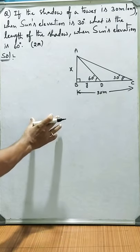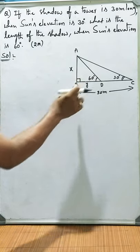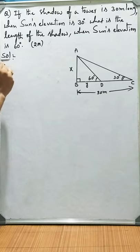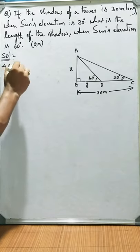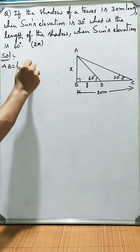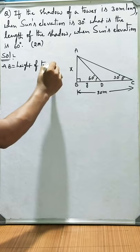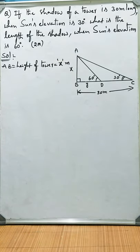We can solve this problem by taking two right triangles which you can observe, ABD and ABC. Let us write what are given. AB is equal to height of tower. It will be some x meters.